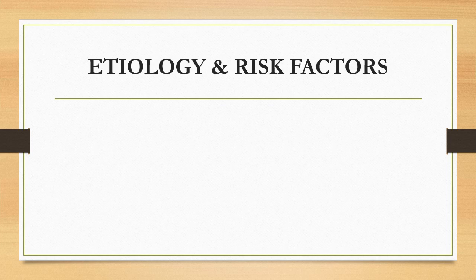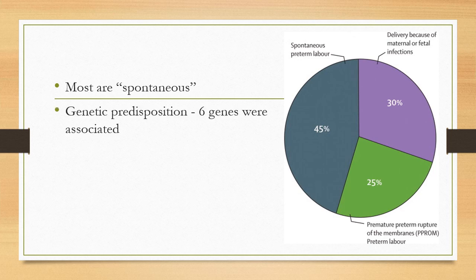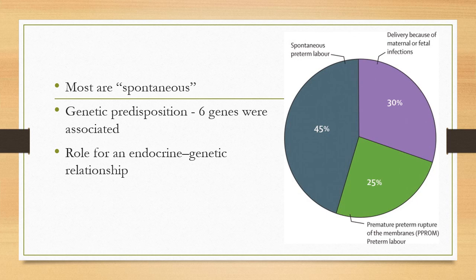Most preterm births are spontaneous, with some link to genetic predisposition and endocrine-genetic relationships. However, there are identifiable factors that if recognized early allow us to intervene — potentially preventing premature birth, ensuring safe delivery, and enabling prompt management. These factors are broadly categorized as maternal factors, fetal factors, and placental factors.